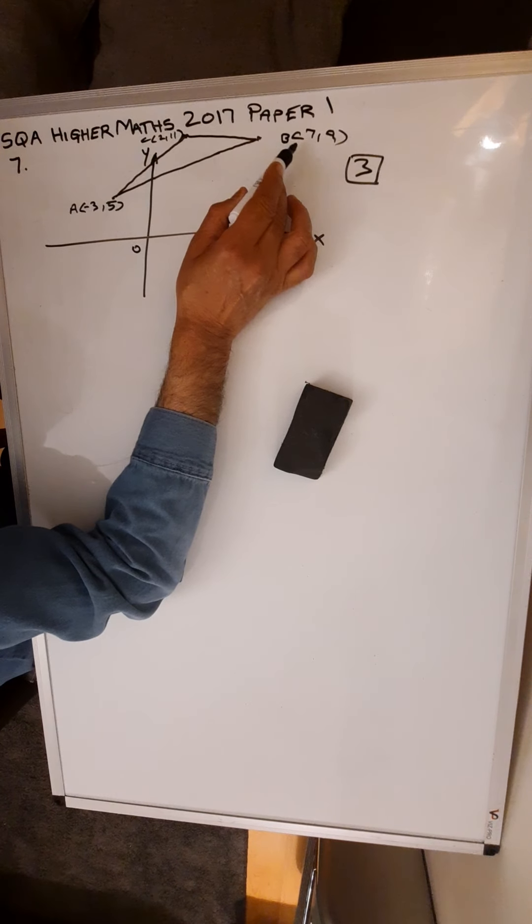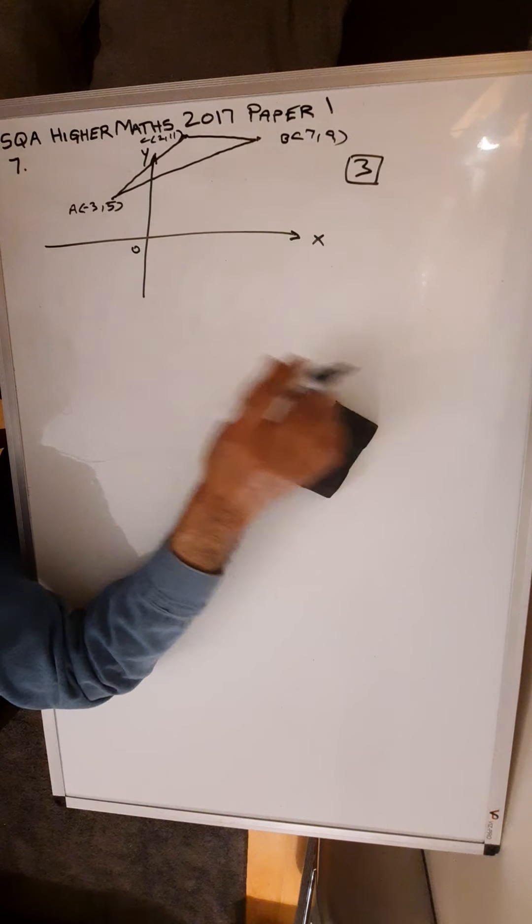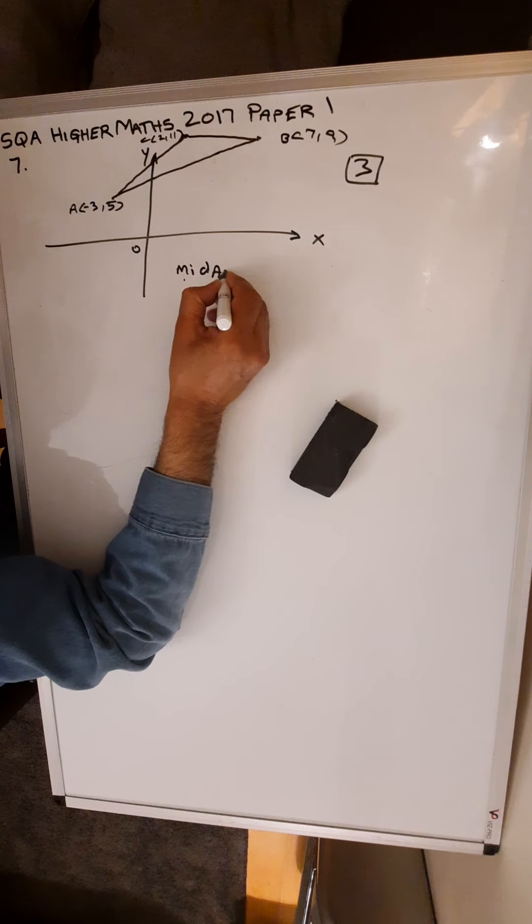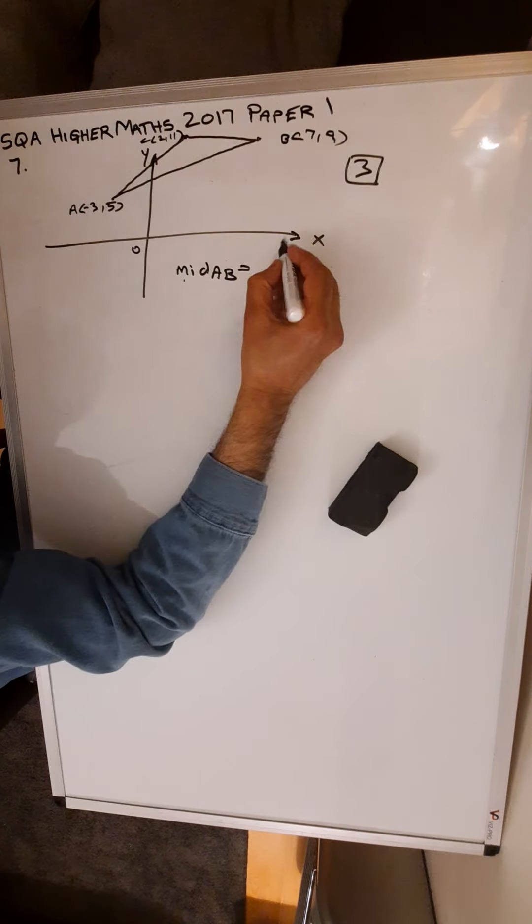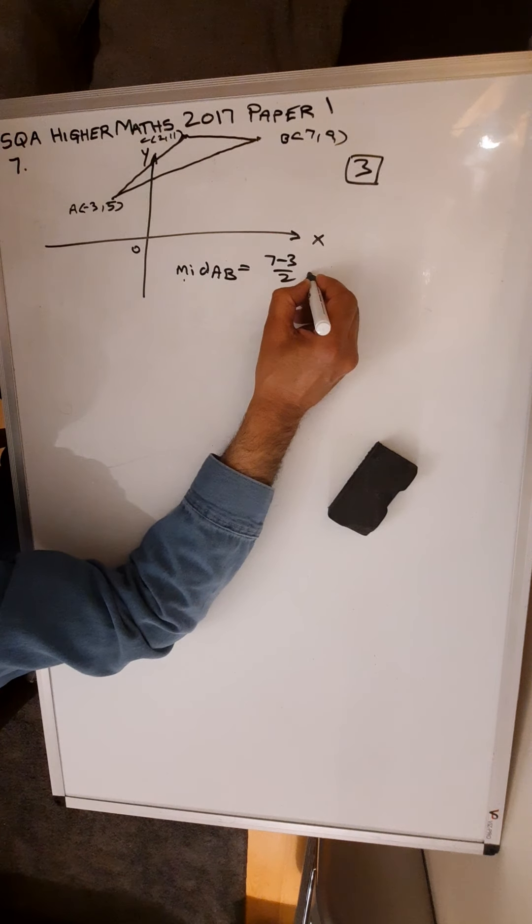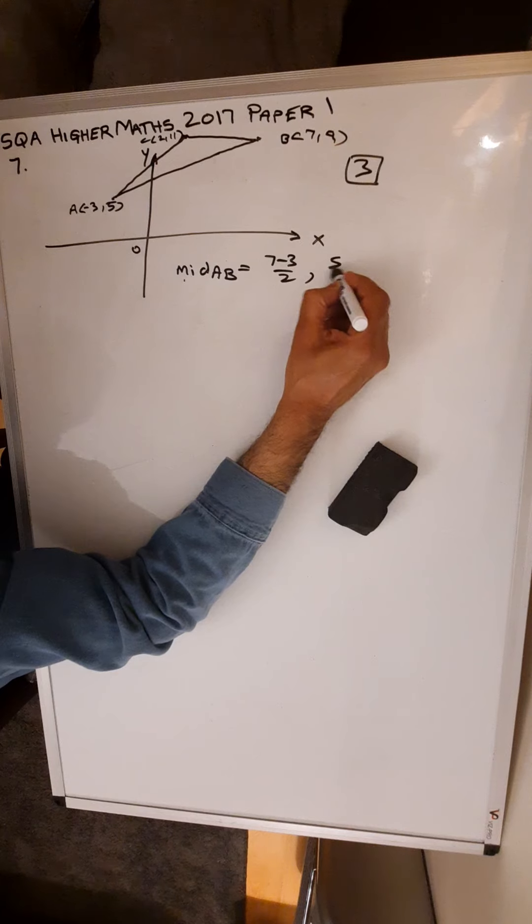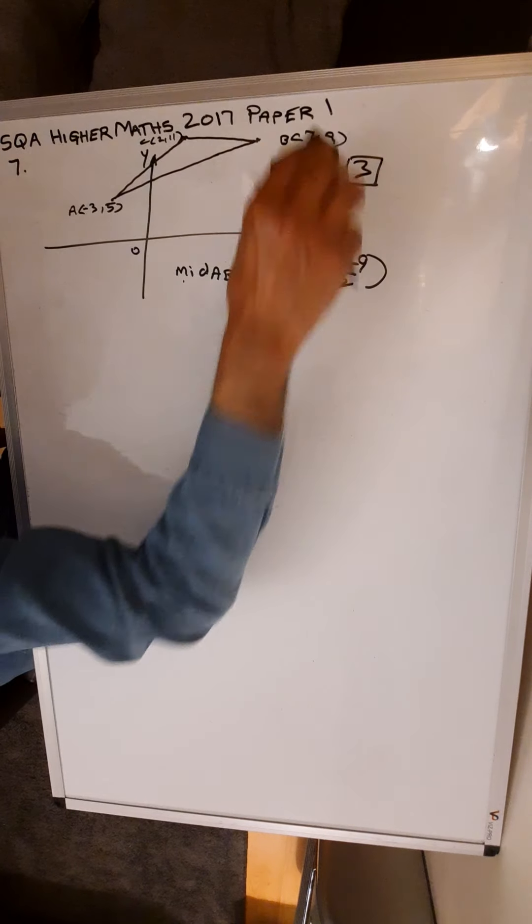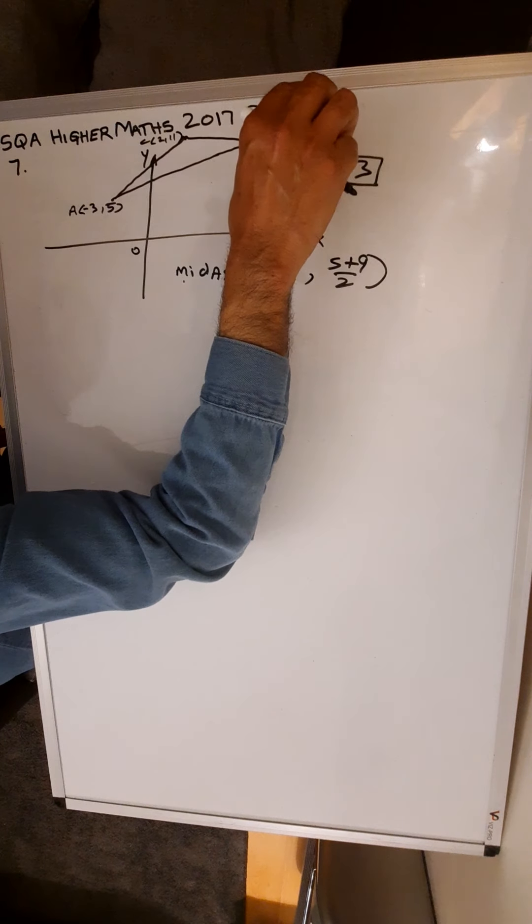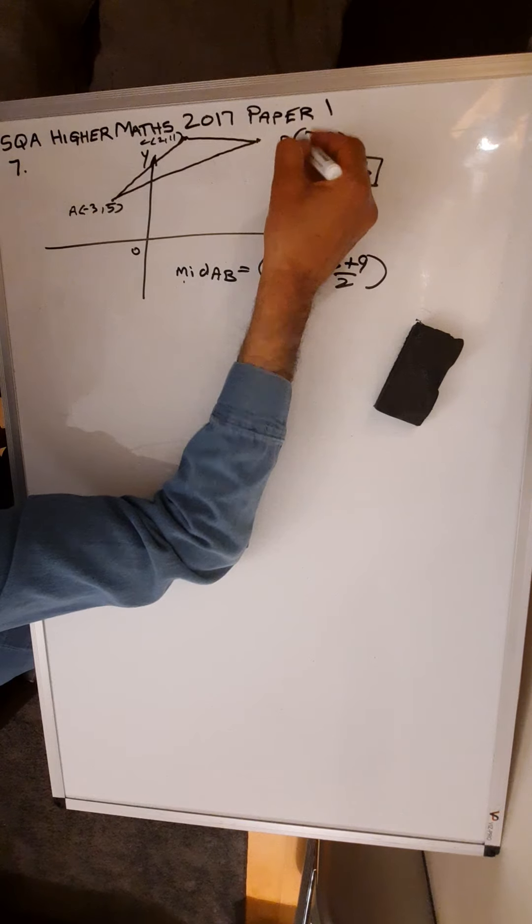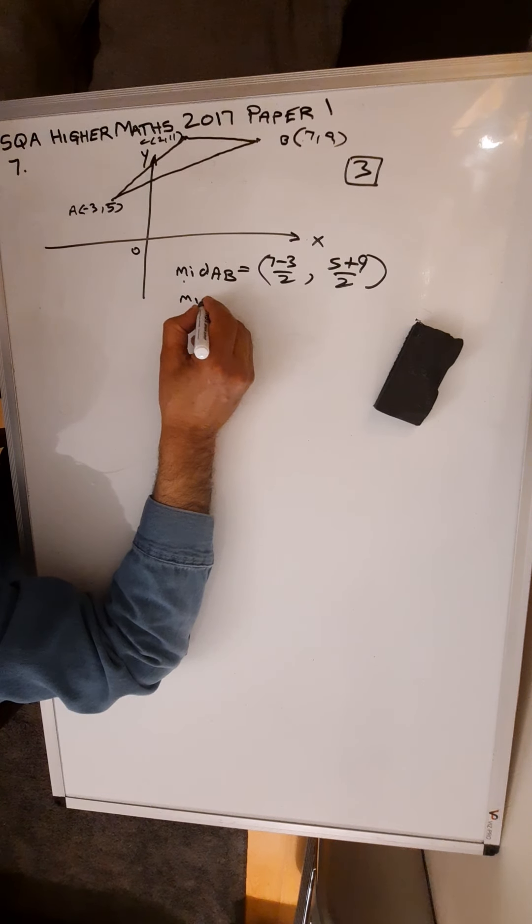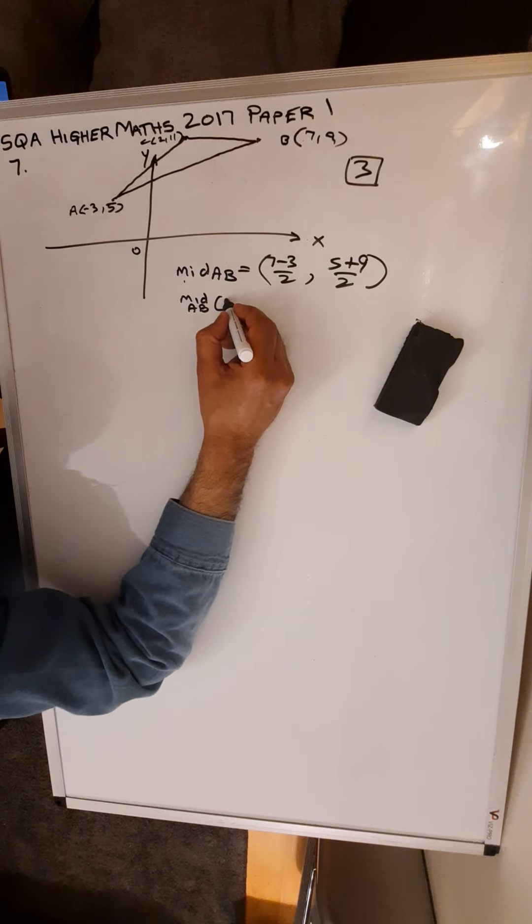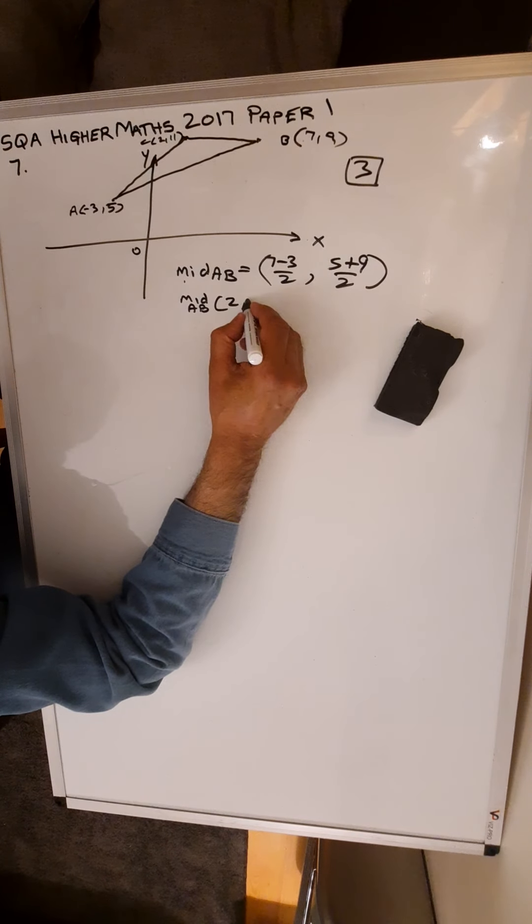So you are looking for the midpoint of AB. Mid AB equals (7 minus 3) over 2 for the x-coordinate, (5 plus 9) over 2 for the y-coordinate. So the midpoint of AB is going to be 4 divided by 2 is 2, and 14 divided by 2 is 7.